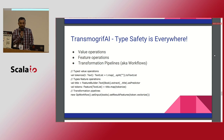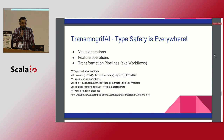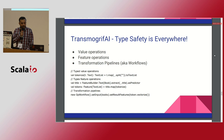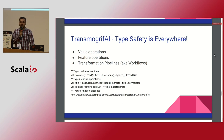Type safety is everywhere in TransmogrifAI — whether it's a value operation, a feature operation, or transformation pipelines (workflows). You can create tokenized text and text lists, then split them into two text lists using library methods. There are predefined data types: for example, if you get an ISBN number, it automatically converts and extracts the title as a predictor. If you have tokens, you can tokenize them. Finally, everything is vectorized so you can fit to the model.